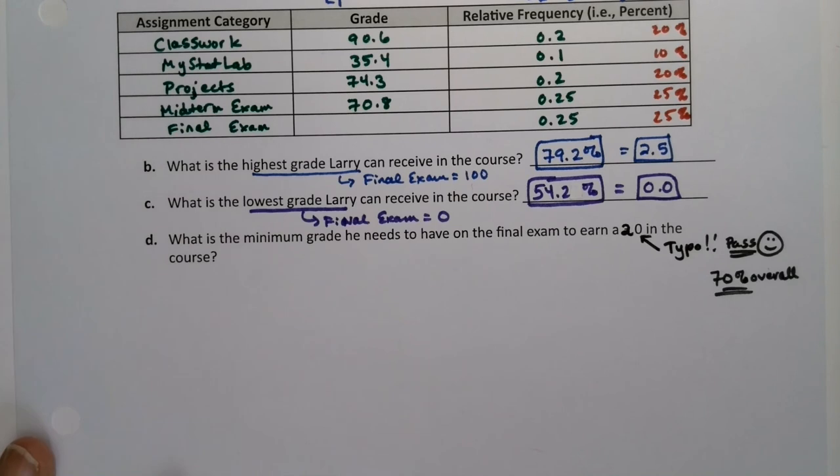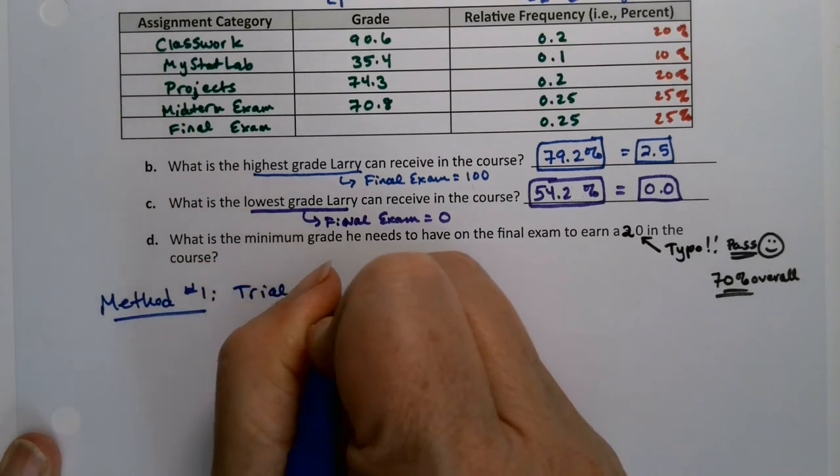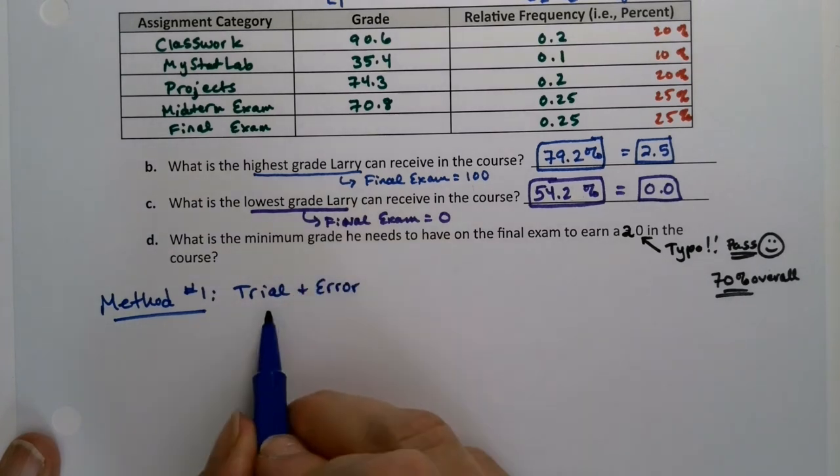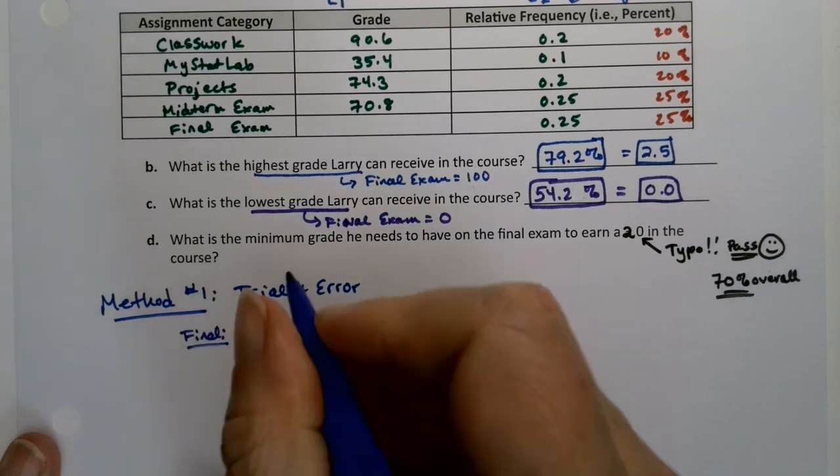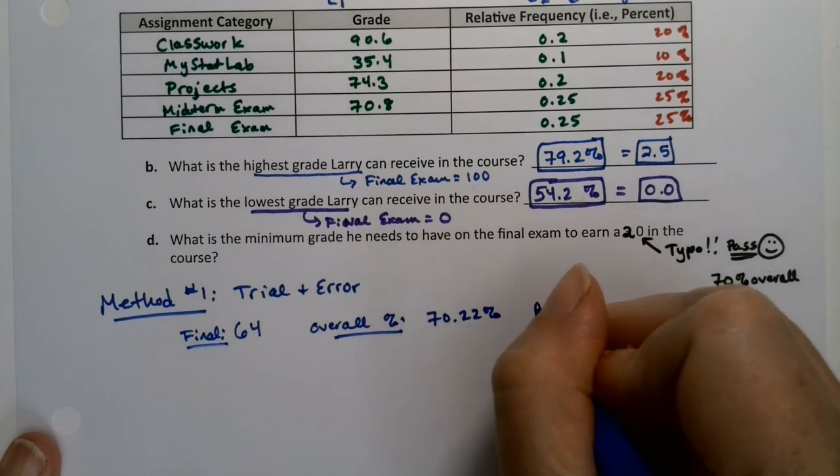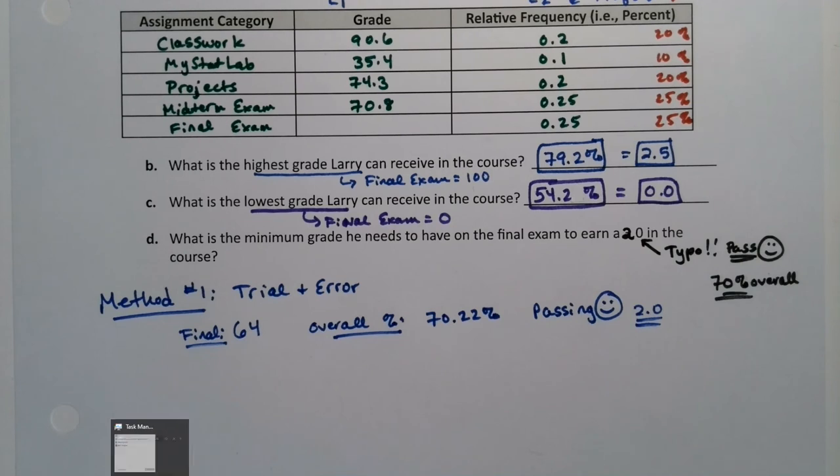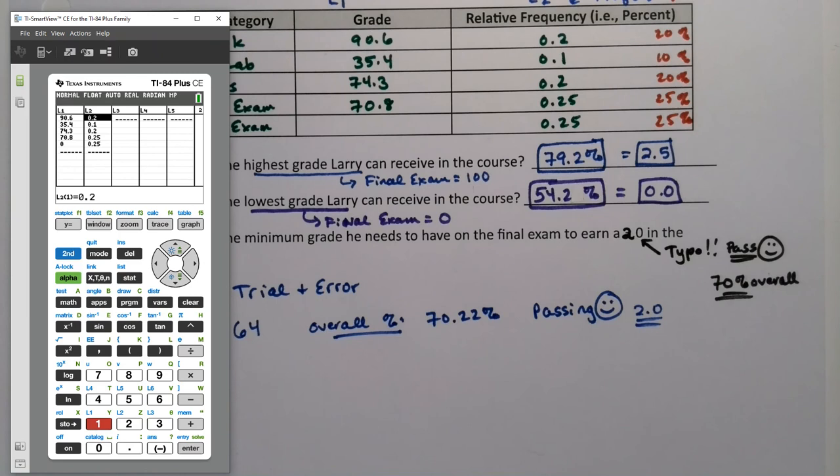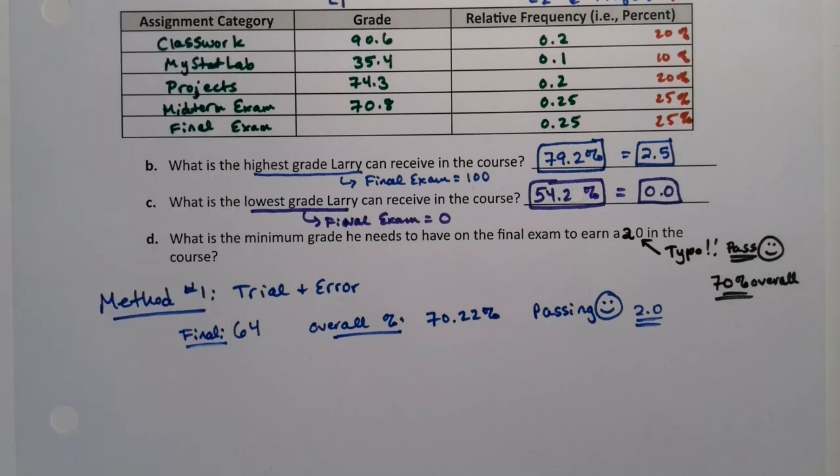Method number one is trial and error. You try, it's not working. You try again. It didn't work. You tried again. It didn't work. And you were getting closer and closer until you find the actual number. So 64 on the final leads to an overall grade of 70.22%, which is passing, which is a 2.0. That's method number one. You can do the same thing in your calculator. When you're in StatEdit, you just go down to the zero and fiddle around until you find the right one. If I type 64 in here, Stat, calculate, one variable, get your freak on, leave your frequency list as L2, and there you see it, 70.22.